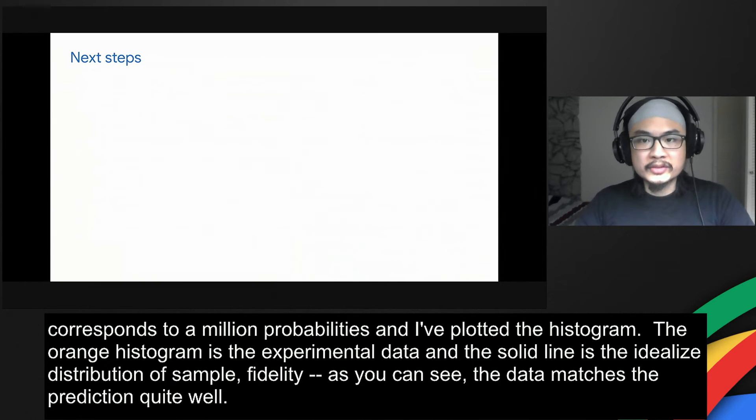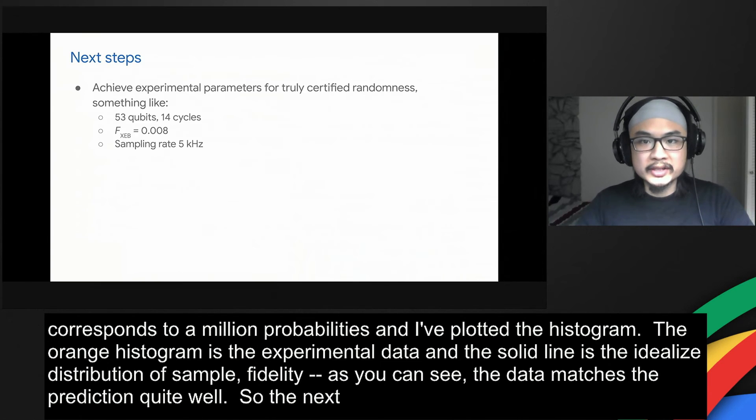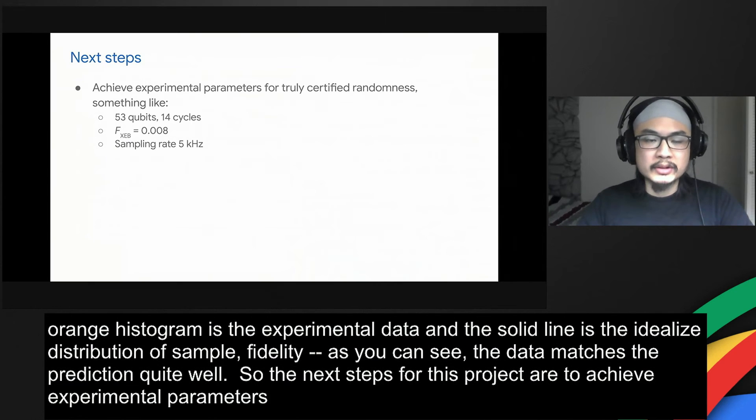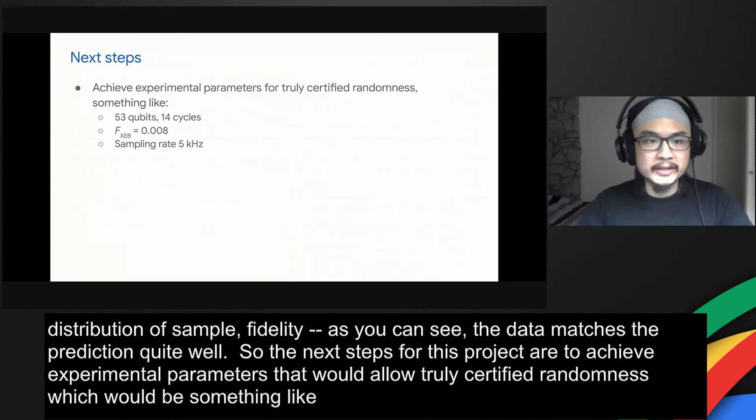The next steps for this project are to achieve experimental parameters that would allow truly certified randomness, which would be something like 53 qubits, 14 cycles at a fidelity of 0.8%, and a sampling rate of 5 kilohertz.